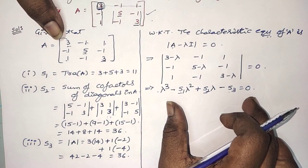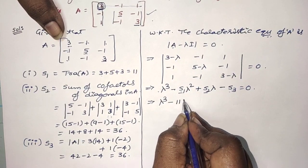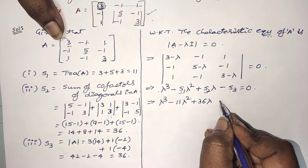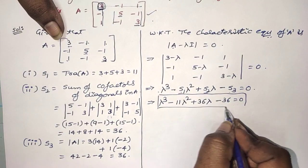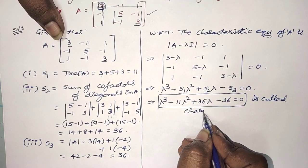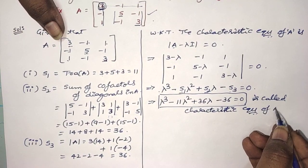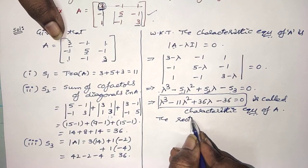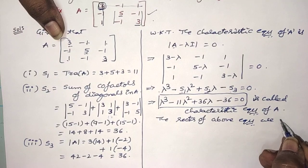Replace all values into the characteristic equation. So we get: lambda cubed minus 11 lambda squared plus 36 lambda minus 36 equals 0. This is the characteristic equation of the given matrix A. The roots of this equation are called eigenvalues.